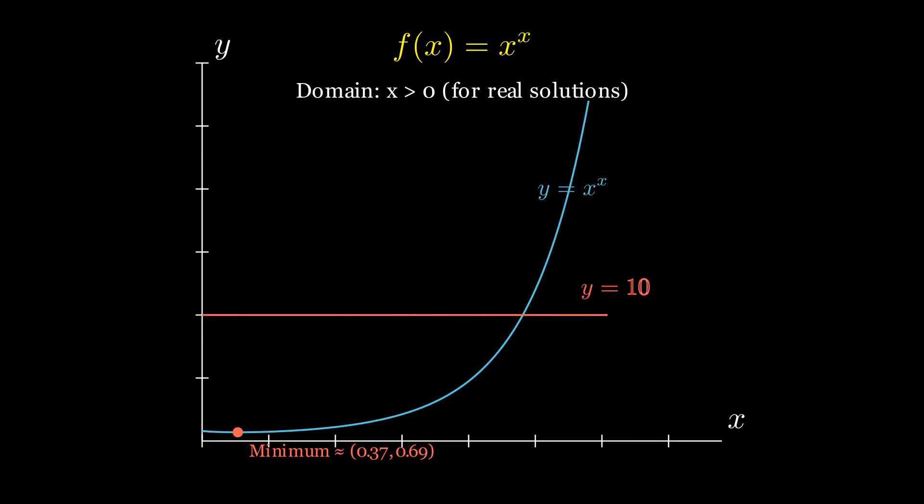The question is, where does this curve intersect with the horizontal line y equals 10? Visually, we can see there is exactly one point of intersection, meaning one real solution.